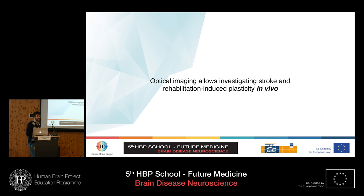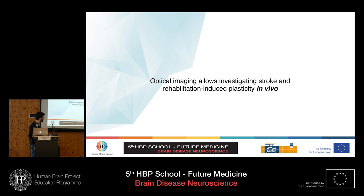Before the development of advanced optical imaging techniques, the only way to study stroke was on ex vivo brain slices, making it impossible to follow the same animal through disease development and rehabilitation over time. After the development of advanced optical imaging, this became possible — you can induce a stroke in the animal and follow their behavior and cortical activity over the entire period. Optical imaging allows investigating stroke and rehabilitation in vivo.